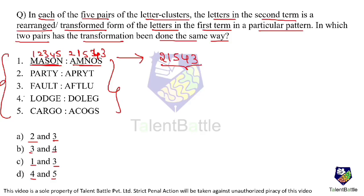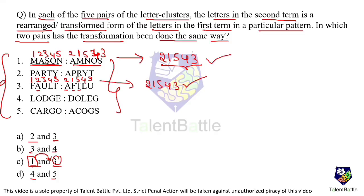Now I need to check if any of the other pairs has the same rearrangement. Looking at the options, one is paired only with three, so let me check three directly — it's a waste to check two, four, and five. I'll give numbers one, two, three, four, five. A is two, so two came first, then F which is one, then T which is five, then L which is four, then U which is three. So here the rearrangement is two, one, five, four, three — exactly the same as the first one.